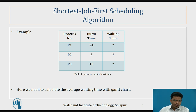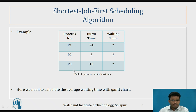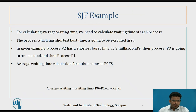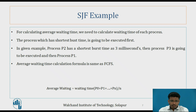Now let's see the Shortest Job First (SJF) scheduling algorithm. Here again we have a table with processes P1, P2, and P3 with different burst times, and we need to calculate the waiting time. The SJF scheduling algorithm executes the process with the shortest burst time first. If multiple processes have the same burst time, then we use FCFS order.